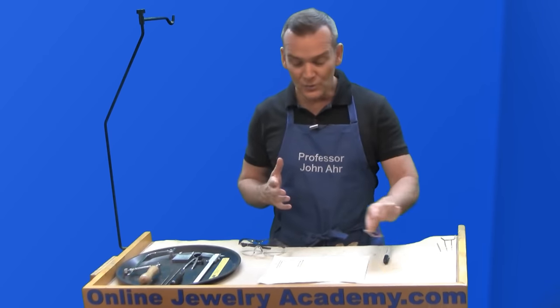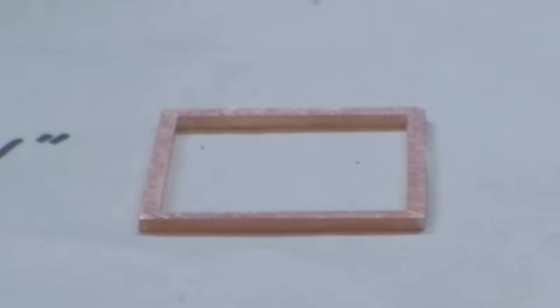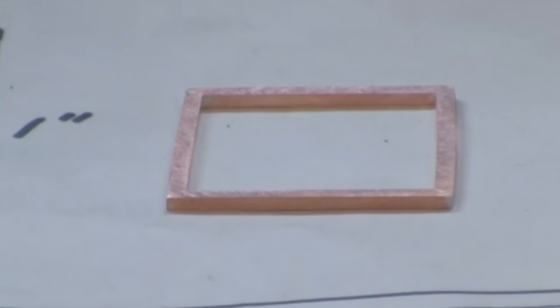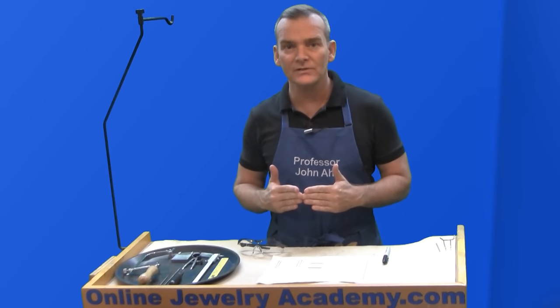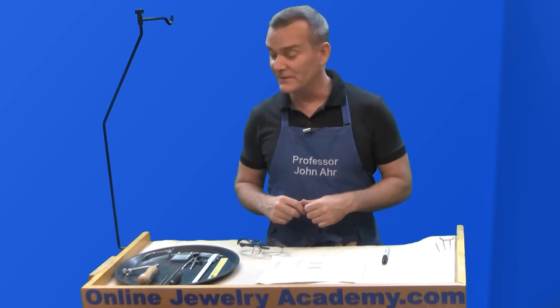Sometimes when you're making jewelry pieces, you would like to make something that has sharp 90-degree angles on it, or any angle for that matter, and there's a specific way of handling this situation to make a very clean result. Let me show you the tools that you're going to need to do this.